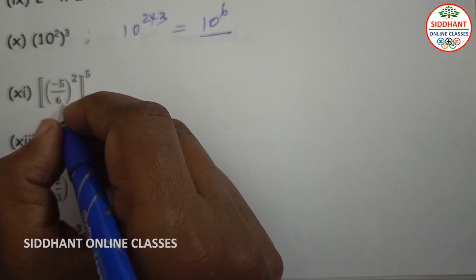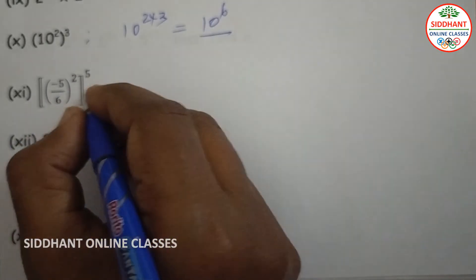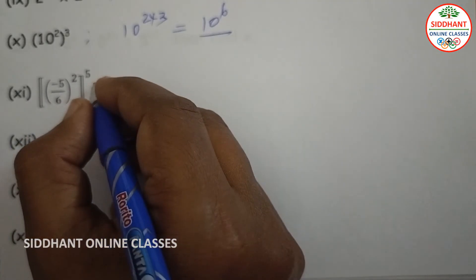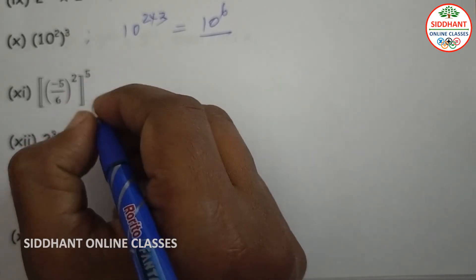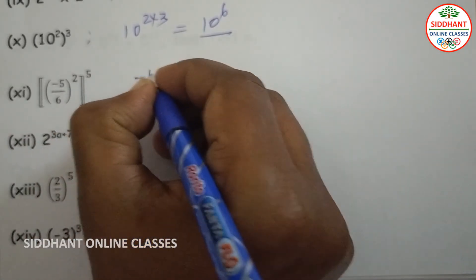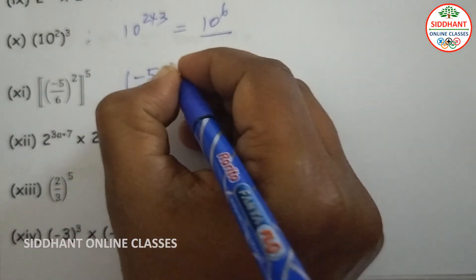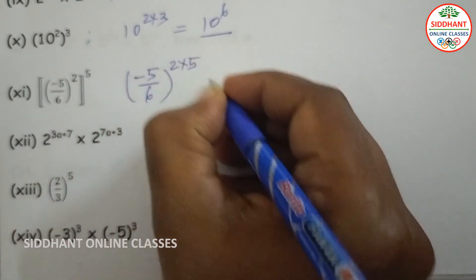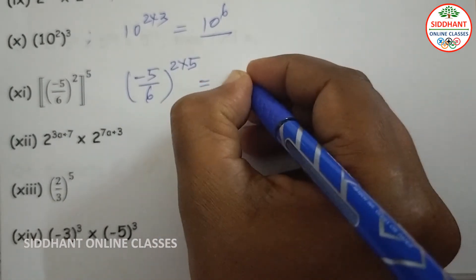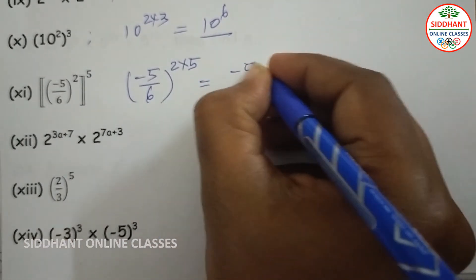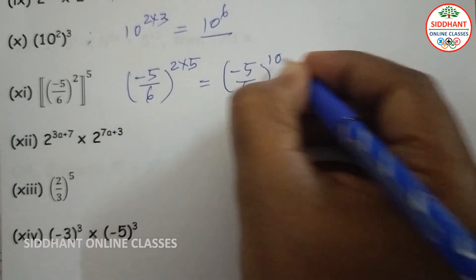Eleventh one: (-5/6) to the power of 2, whole power 5. Using a to the power of m, whole power n, equals a to the power of m times n, we get (-5/6) to the power of 2 into 5, that will be (-5/6) to the power of 10.